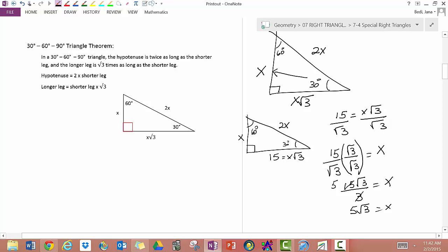If you were given, in a separate example, that x was, or the short leg, which we call x, which is opposite to the 30 degree angle, if that's 5, then the hypotenuse would be double, which is 10. And the long leg would be 5 root 3.